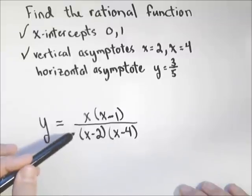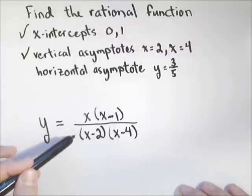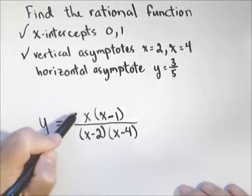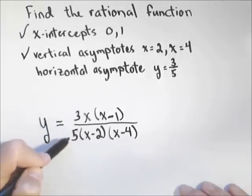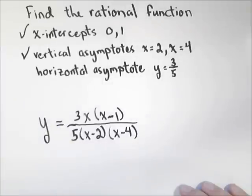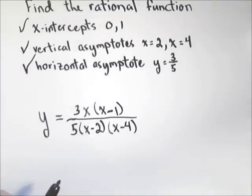So currently, this thing has a horizontal asymptote at one. So all we have to do to make it three-fifths is basically multiply it by three-fifths, and now we have a horizontal asymptote at three-fifths, and we have our rational function.